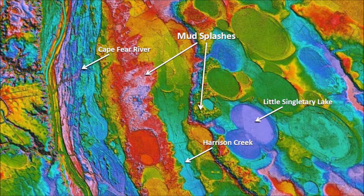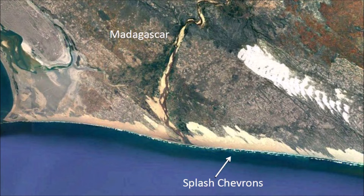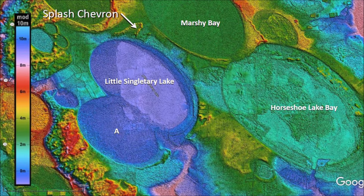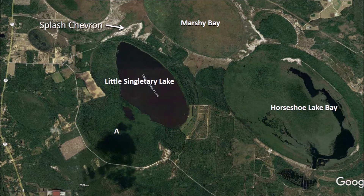The impact of an ice projectile on a riverbed drenches the sediment and deposits it on higher terrain. Splash chevrons are found on many coastal areas around the world. The V-shaped sand deposits along the shoreline of southern Madagascar are thought to have been created by tsunamis that picked up sand from the shallow seabed and brought it to higher ground. Some scientists have suggested that extraterrestrial impacts in the ocean could also have generated such tsunamis. Little Singletary Lake also has a splash chevron, probably from a small lake hit by the glacier ice boulder that made the basin. The chevron can be seen more clearly in the satellite image because the white sand contrasts against the darker background.